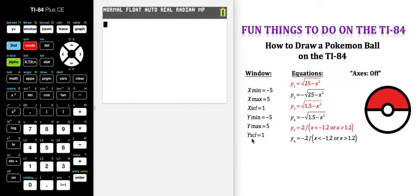Your window setting needs to be scaled to negative 5, 5 on your x-axis and negative 5, 5 on your y-axis.